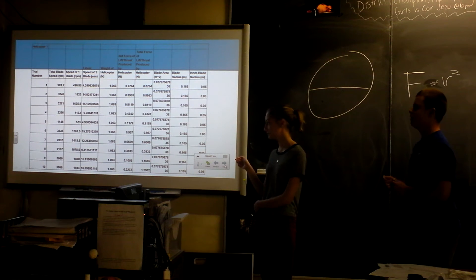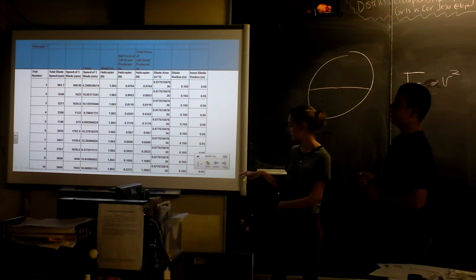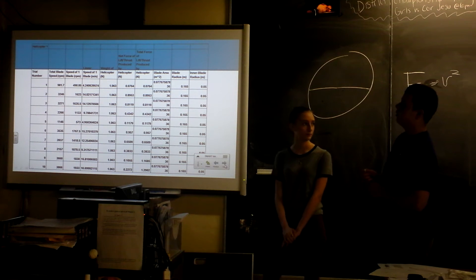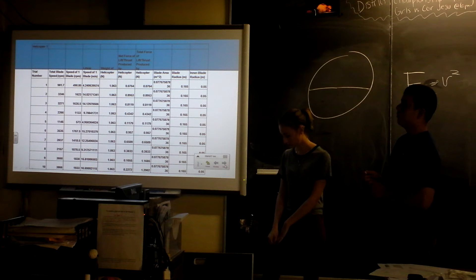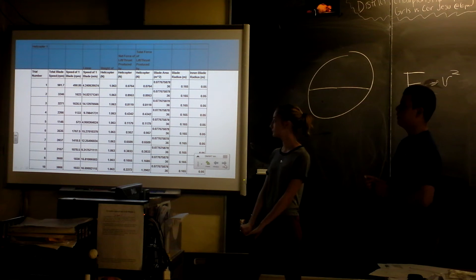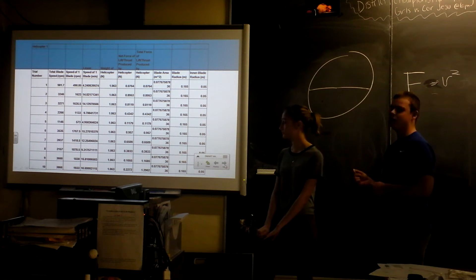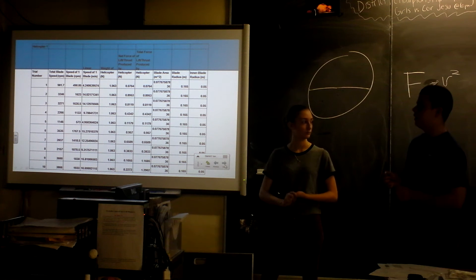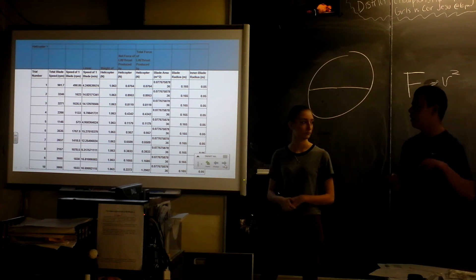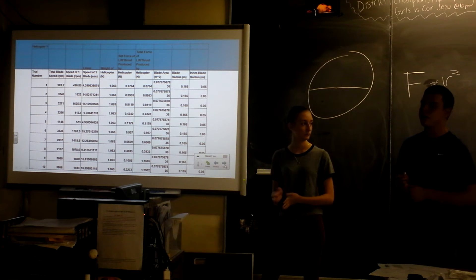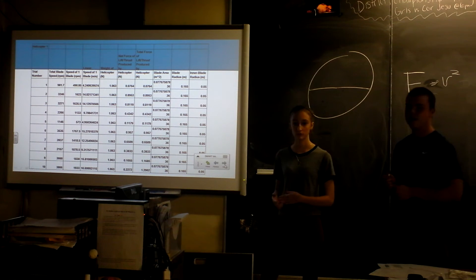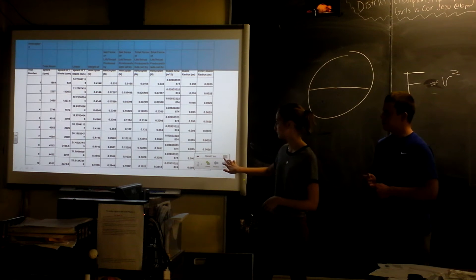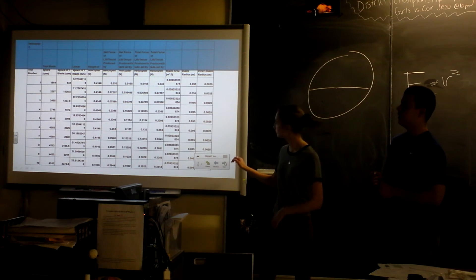These are our data tables. These are more for just being reported. But in order to find everything we wanted, we had to get the linear speed of the blades from the RPM, and we also had to get the area of the blades. We were trying to do something with mass flow and conservation of momentum, but then we realized that our helicopter wasn't going up or down because it was on a string, so we couldn't do any momentum things. And that's the data table for the second helicopter.